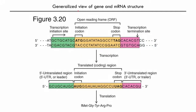The open reading frame begins with a start codon and ends with a stop codon. Flanking the open reading frame are upstream and downstream regions that do not code for protein but are transcribed into mRNA. Transcription of the DNA sequence into RNA begins at the transcription initiation site and ends at the transcription termination site, which are defined sequence elements on DNA that we will discuss in later lectures.